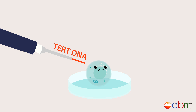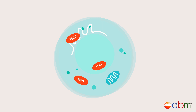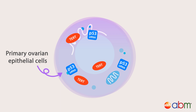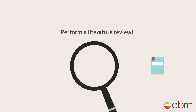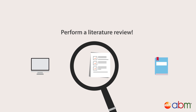Many cell types require a combination of both methods. For example, recent studies have found that coexpression of the hTERT catalytic subunit with either the p53 or RB siRNA can immortalize human primary ovarian epithelial cells. To find out what will work best for your project, perform a literature review to know how similar cell lines have been previously immortalized.